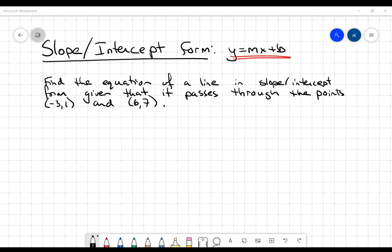So I want to find the equation of the line in slope-intercept form, given that it passes through the points (-3, 1) and (6, 7). So I want the equation y equals mx plus b. Now remember, m is the slope.